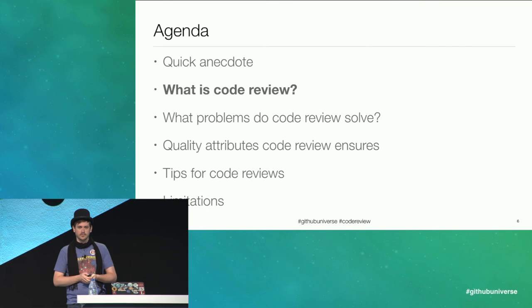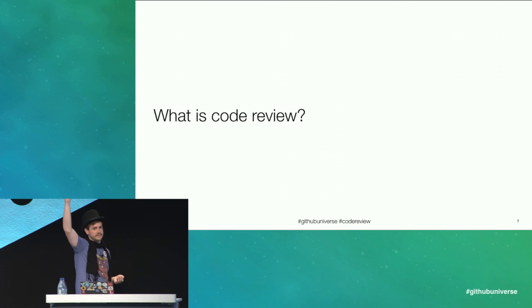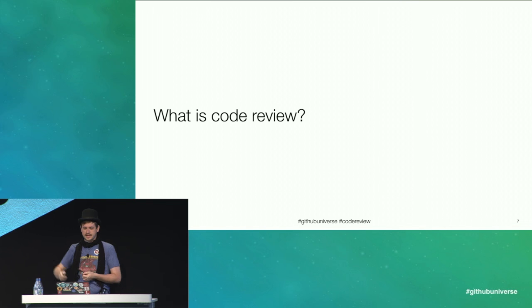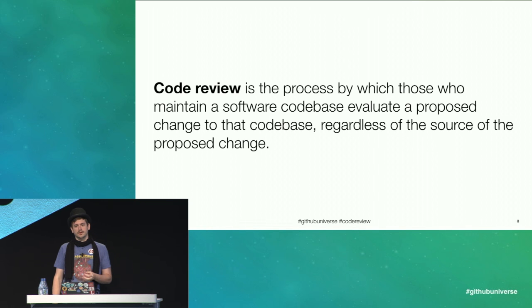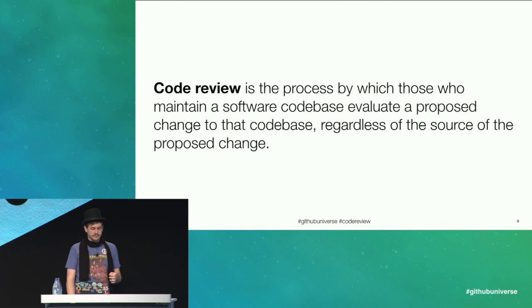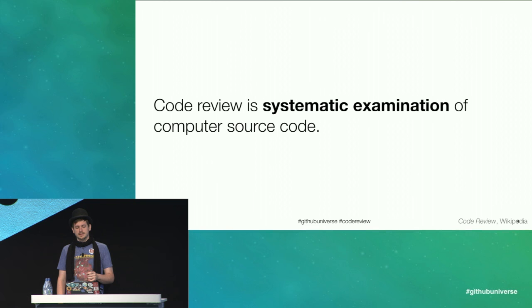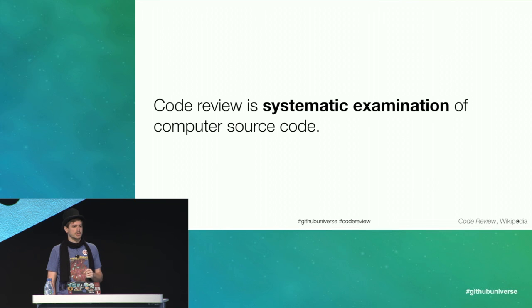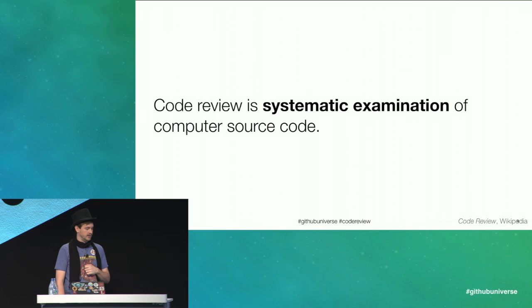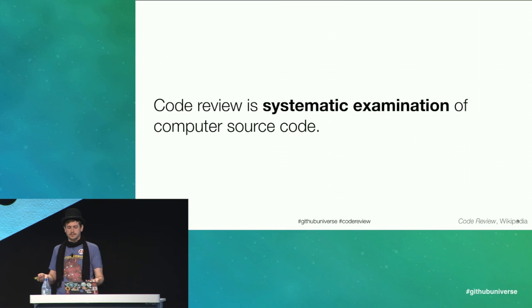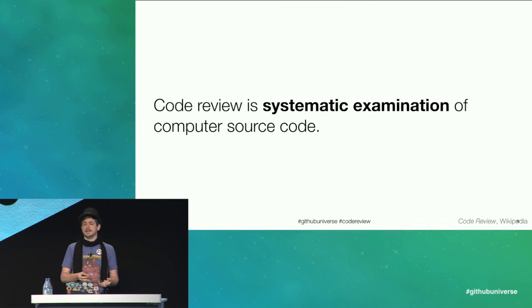I thought a bit and wrote how I myself define code review: code review is the process by which those who maintain a software code base evaluate a proposed change to that code base, regardless of the source of the proposed change. Wikipedia's definition is a little more succinct — code review is the systematic examination of computer source code. The similarity in our two approaches is that the act is an examination, and the examination must be systematic.